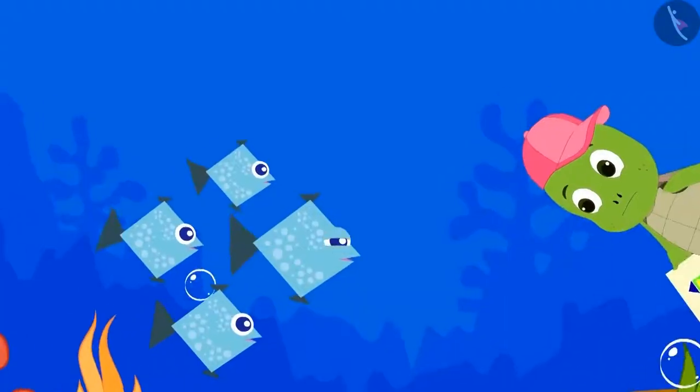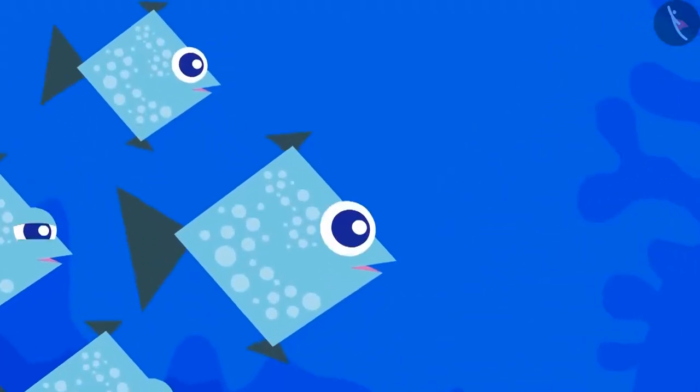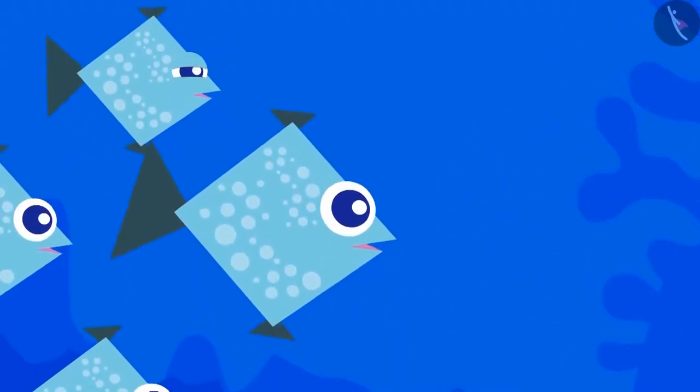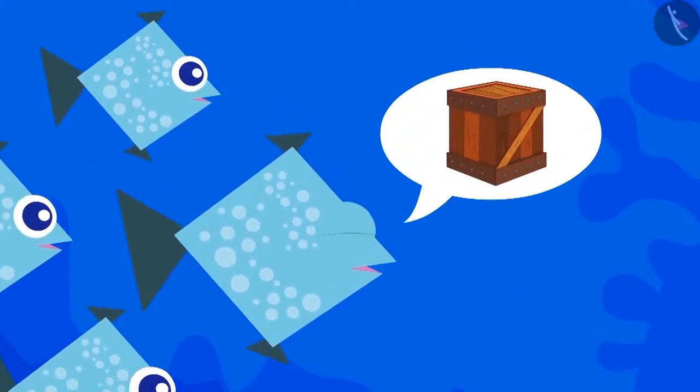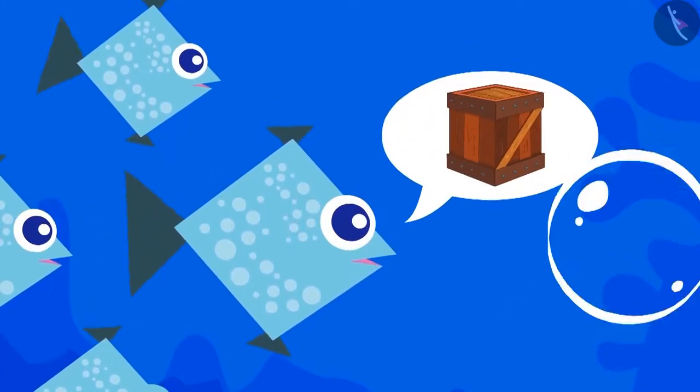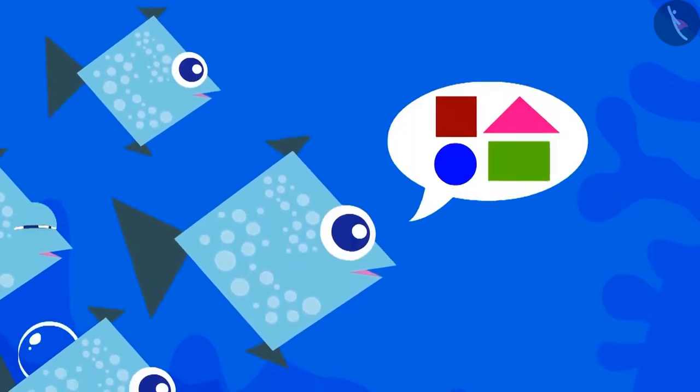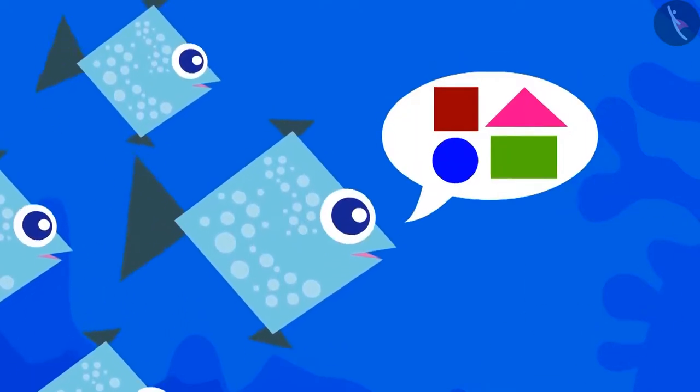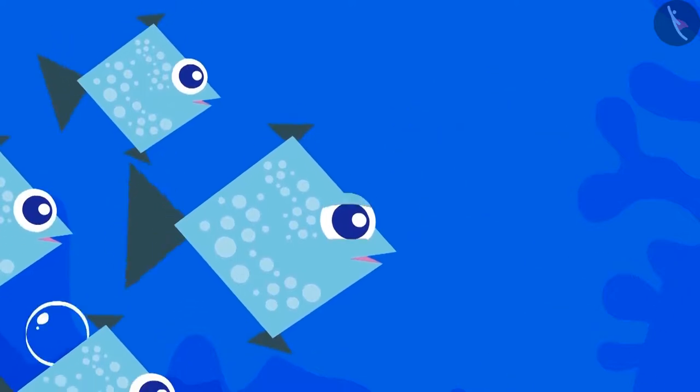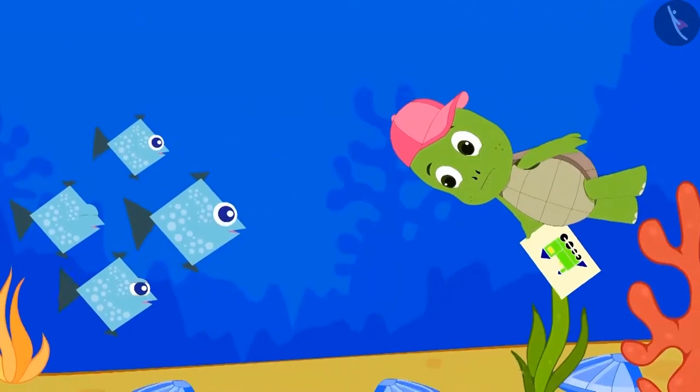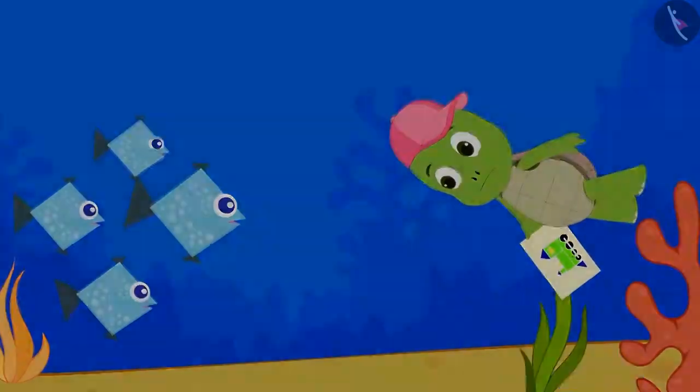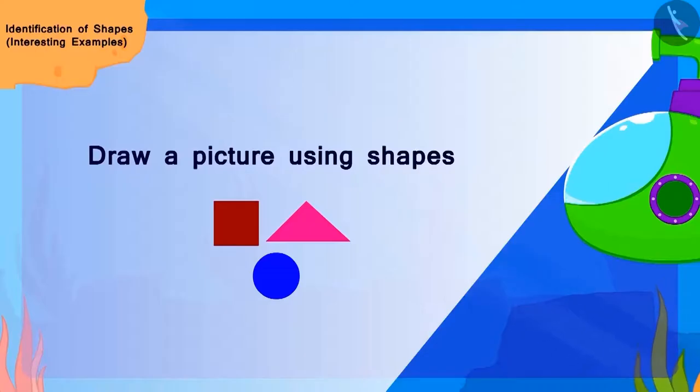He showed the picture of his toy to those fishes and asked them if they had seen his toy. The fishes told Tufan that they have hidden his toy in a box. If he can make a picture of those fishes using these shapes, then they will take him to that box. Can you help Tufan to draw this picture?